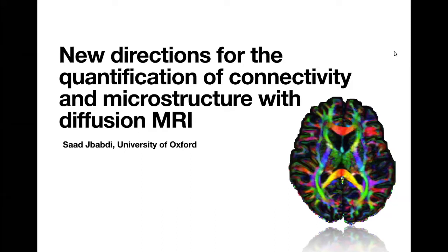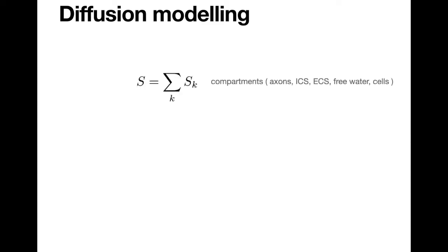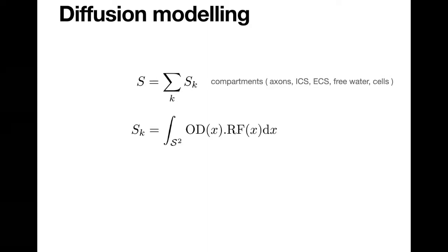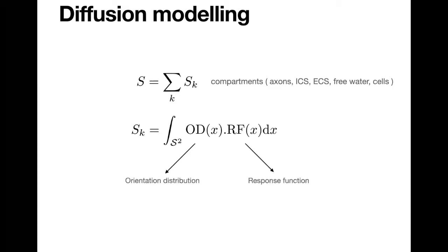My talk is about diffusion imaging, and I thought I would start by framing it, beginning talking about diffusion modeling. So what do we do when we do diffusion modeling? There is something called the standard model of diffusion, which one of the previous speakers, Dmitry Novikov, coined this term for diffusion. The signal is an arithmetic sum of signals from different compartments, such as axons, intracellular space, extracellular space, free water, cells, etc.